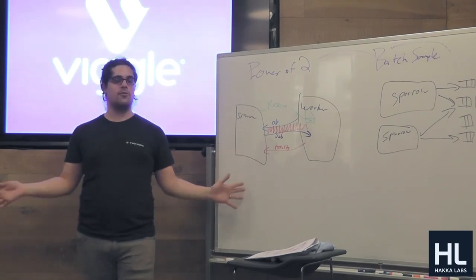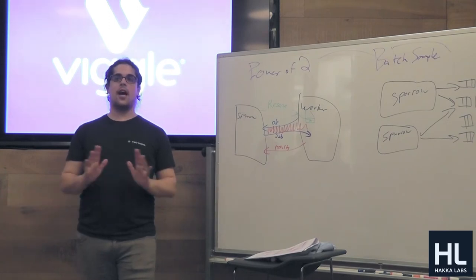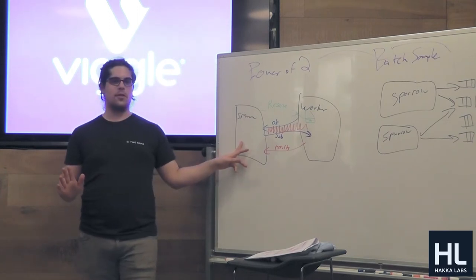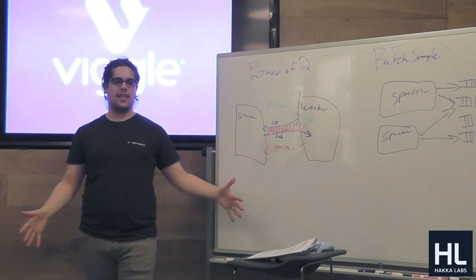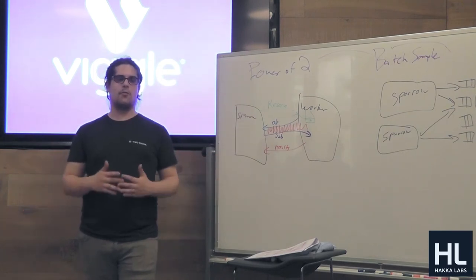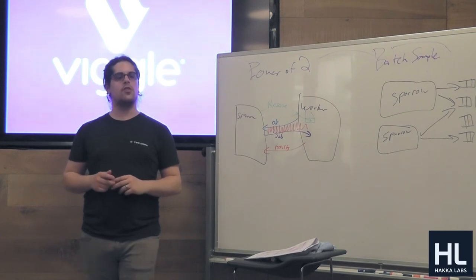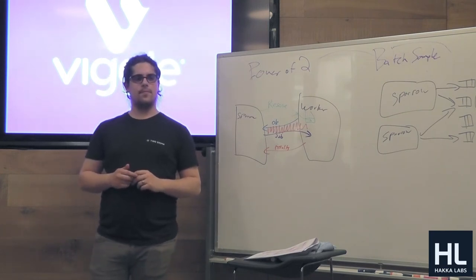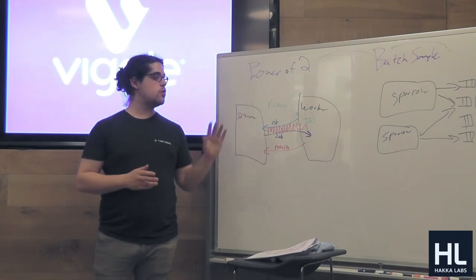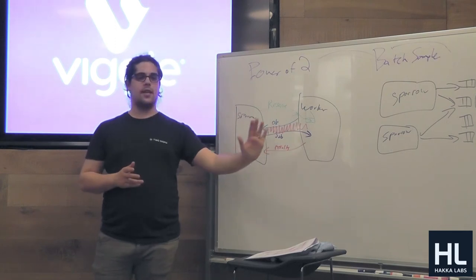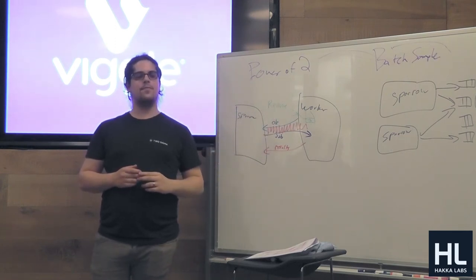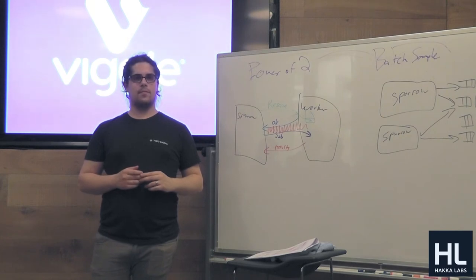So to answer the cancellation question simply: proactive cancellation moves the 'I don't care' message earlier in time. You save the idle period where the worker waits for the job to arrive. There's some code complexity, but for many workloads it's probably just better to always do proactive cancellation.